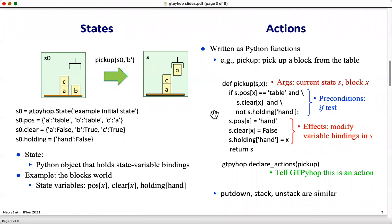Here's the definition of the pick up action for picking up a block from the table. The arguments include the current state and the block to be picked up. If the position of the block is the table, and the block is clear, and the hand is empty, that if test is the preconditions. If the preconditions are satisfied, then the effects consist of modifying the current state and returning it.